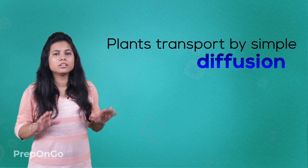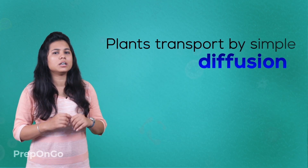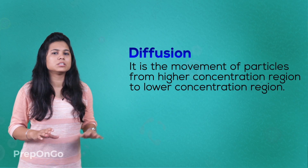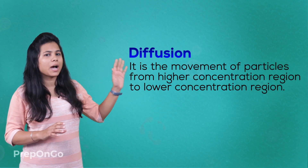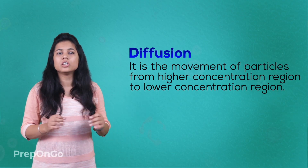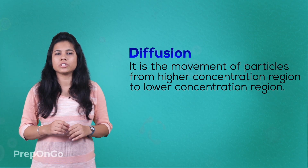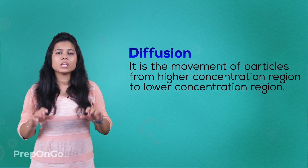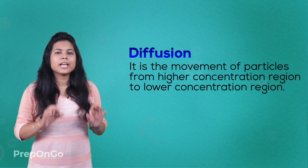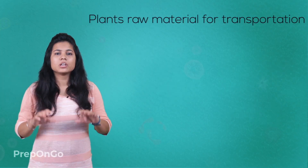We have studied diffusion in our earlier classes — it is the movement of particles from higher concentration to lower concentration. This diffusion process helps in transportation of food and water to different parts of the plant.